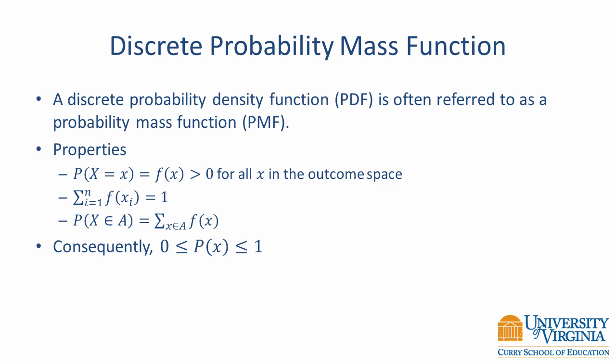For a discrete random variable, this function is referred to as a probability mass function, or PMF. It provides the probability of observing each possible value. The probability of any particular value in the outcome space must be greater than 0, and the sum of the probabilities for every outcome must be 1. As a result, all probabilities from a PMF are between 0 and 1 inclusive.